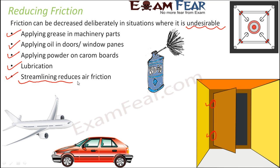Streamlining is another way to reduce friction. Various objects have a specific shape — for example, aeroplanes have a very unique and different shape which helps them to fly in air. This specific designing of objects so that they are able to reduce friction is known as streamlining. Aeroplanes are designed to reduce air friction because they travel through air. Similarly, cars are also designed considering air friction, so their shapes are designed to reduce air friction and allow them to move forward smoothly.